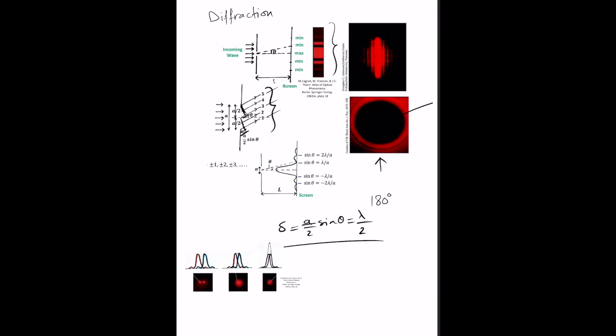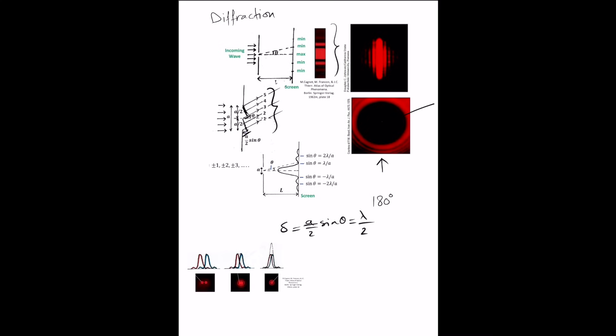The wave nature of light also limits resolution — the ability of an optical system to distinguish between two closely spaced objects. Because light is diffracted from each object, if the two objects are far enough apart, the central maxima of the two diffraction patterns will not overlap and the images are resolved. But if the objects are closer and the central maxima overlap, the images cannot be distinguished. The resolution limit of an optical device is determined by the ratio of the wavelength used to the dimension of the object.